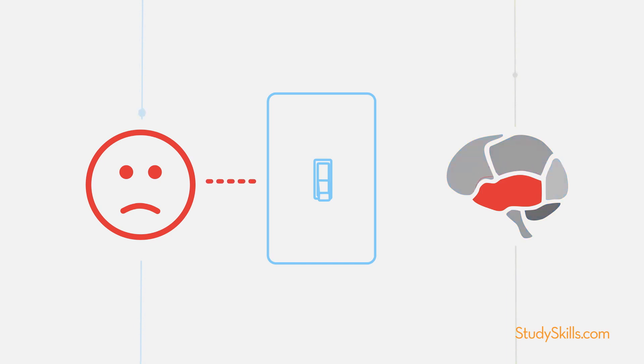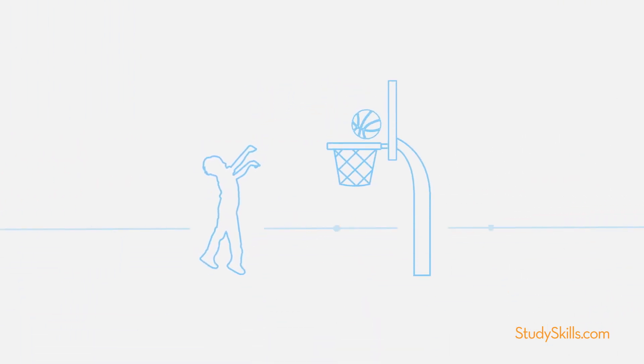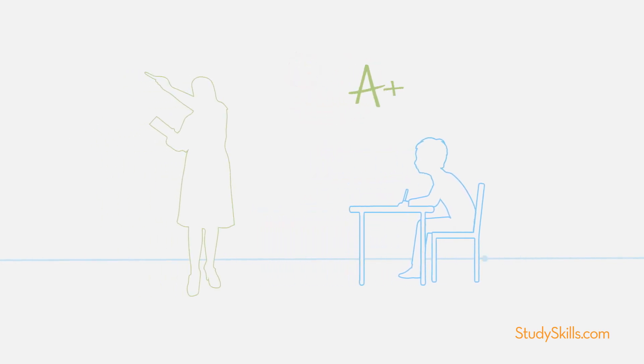This understanding is especially critical for students with learning challenges because they are often successful with things they like, but seem unmotivated by things they don't. They may perform well for a teacher they like, while failing a class with a teacher they don't like.